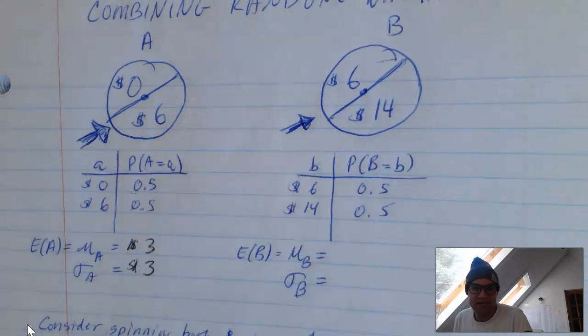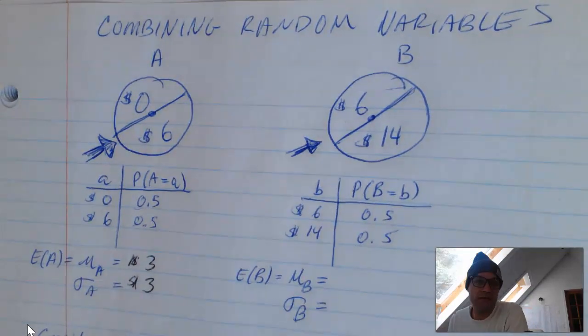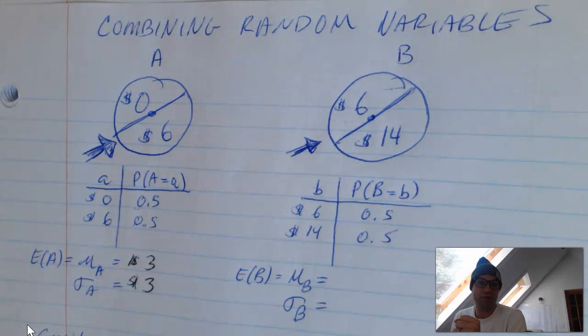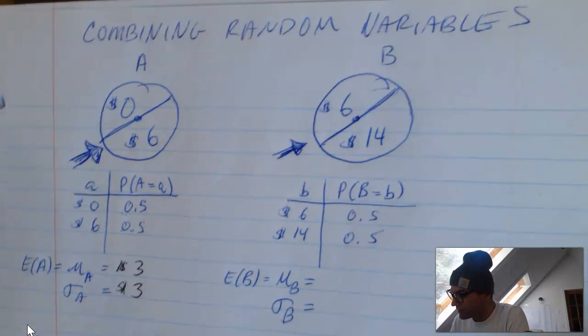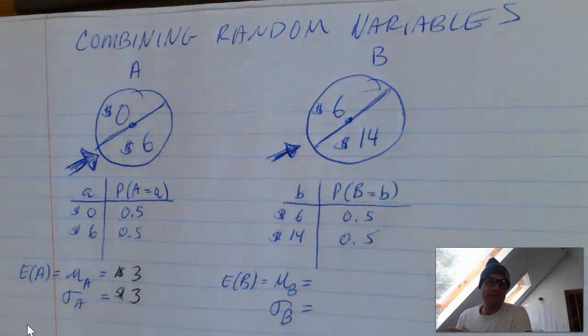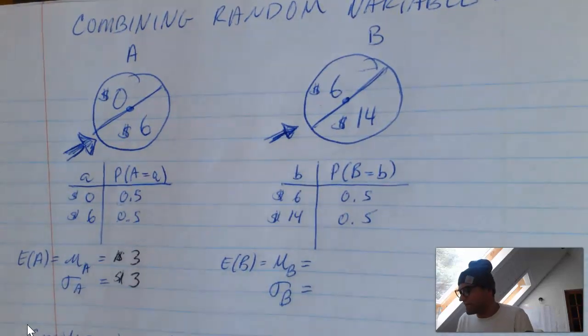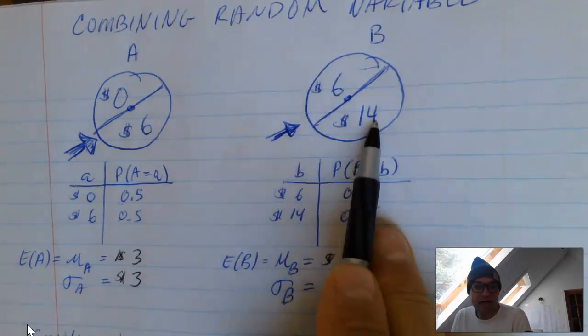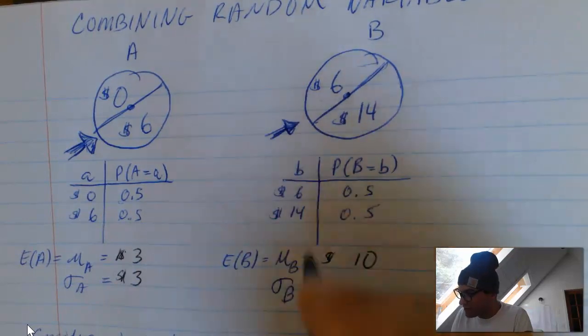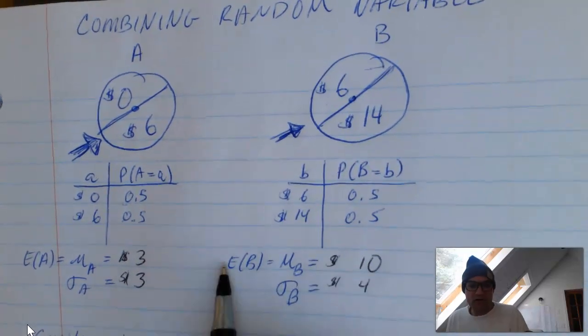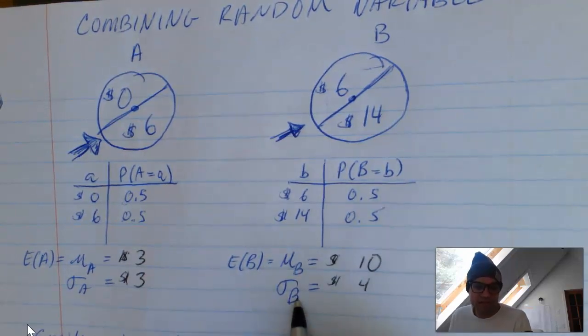And if you think, well, what the heck is a standard deviation? A standard deviation is the average distance, like how far off you're going to be from the mean typically. Well, if the mean's 3 and you're either getting 0 or 6, you're actually exactly 3 off from the mean every single time, which is kind of interesting. You'll notice it even more in the second one. Here's game B. You can win $6 or $14. If I spun this and I added them all up and divided by how many times I played, on average if I'm winning 6 half the time and 14 half the time, I'm expected to win $10 on average. Notice how far away from 10 is 6? It's 4 away. How far away is 10 from 14? It's 4 away. The standard deviation of this game is $4.